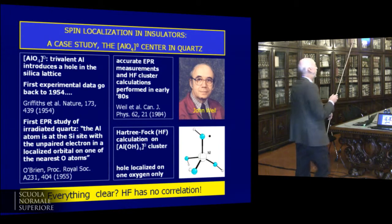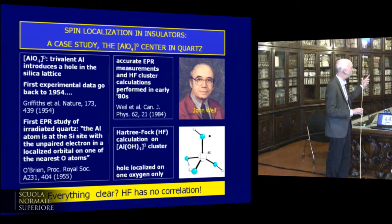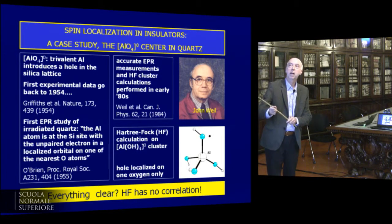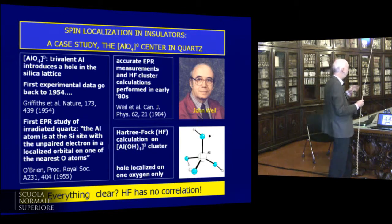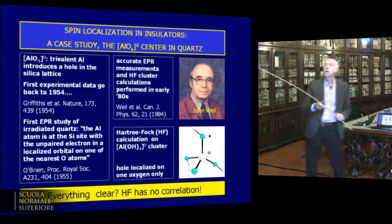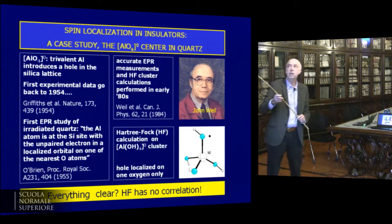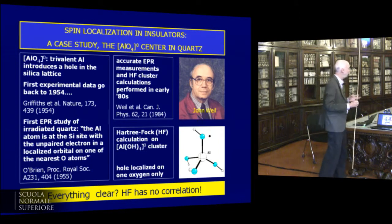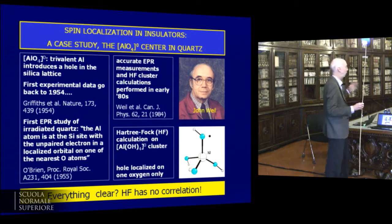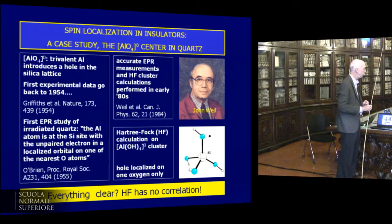An aluminum impurity in silicon dioxide. If you have silicon dioxide, silicon is four-valent — tetravalent. If you replace one silicon atom with an aluminum atom, which is trivalent, you introduce a hole, and so you have a magnetic impurity. This is well known since a long time, going back to the 1950s when the first EPR experiments had been reported on this system. The real full characterization was done by John Weil, a superb electron spin resonance spectroscopist, who worked in the 1980s and combined EPR experiments with Hartree-Fock calculations on very simple models, showing that when you introduce an aluminum atom in the tetrahedron, you create a hole, and the hole localizes on a single oxygen.